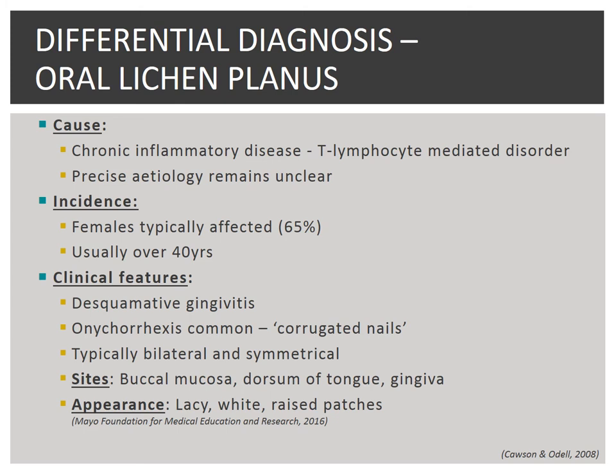Oral lichen planus is a chronic inflammatory disease of the oral mucosa. The precise aetiology of oral lichen planus remains unclear. Histologically, there is hyperkeratosis or parakeratosis of the epithelial layer, with liquefactive degeneration of the basal cell layer and an increase in lymphocyte infiltrates. T-cell lymphocytes, specifically CD4 and CD8 cells, predominate the epithelial-mesenchymal junction. Oral lichen planus is more common in females and those over the age of 40. Lesions are usually long-lasting and the gingiva are frequently affected. Our patient presents with desquamative gingivitis, which is a likely indicator of oral lichen planus. In addition, lichen planus can display lacy, white, raised patches of tissue and are usually bilateral and symmetrical. Nail changes may be a further indication of lichen planus.